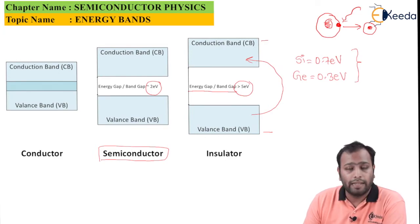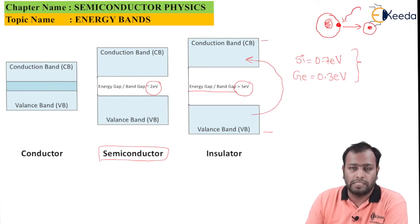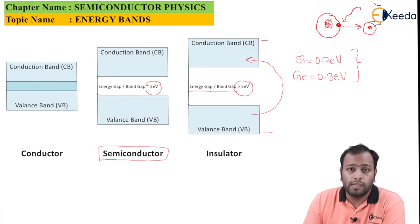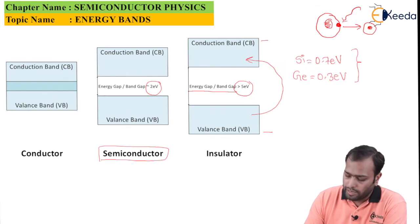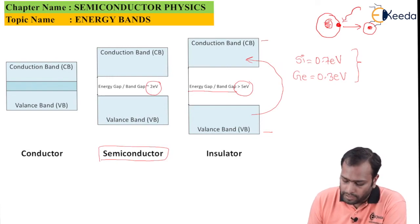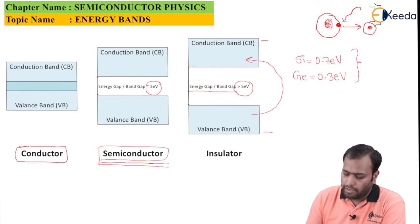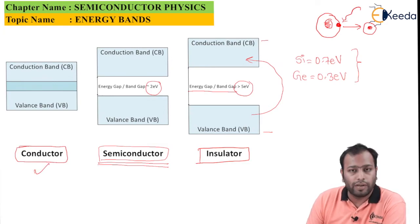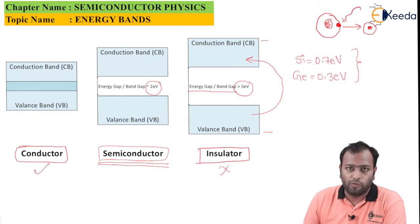In semiconductors, the band gap is achievable, meaning we can vary the conductivity of the material by pushing electrons from the valence band to the conduction band and withdrawing them back. In summary: the band gap is zero in conductors, minimum in semiconductors, and very wide in insulators. Therefore, conductors are good conductors of electricity, insulators are bad conductors, and the conductivity of semiconductors can be varied. Thank you for watching — stay tuned and subscribe to Ikeda.